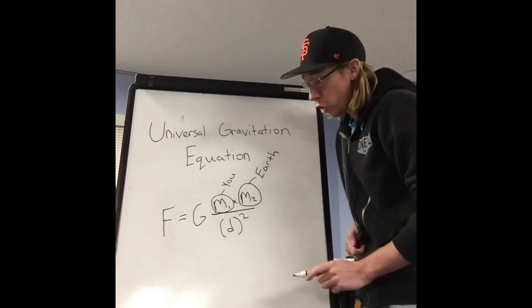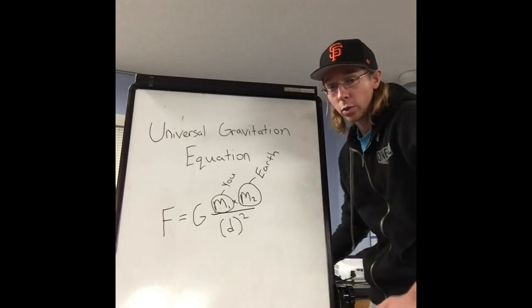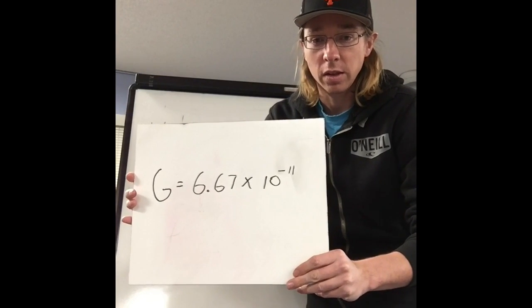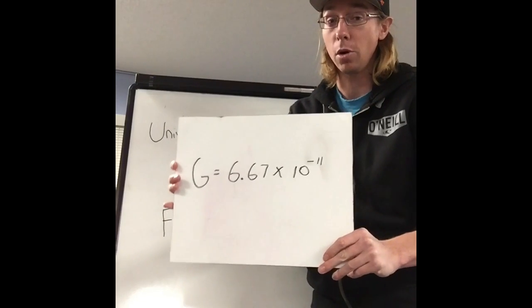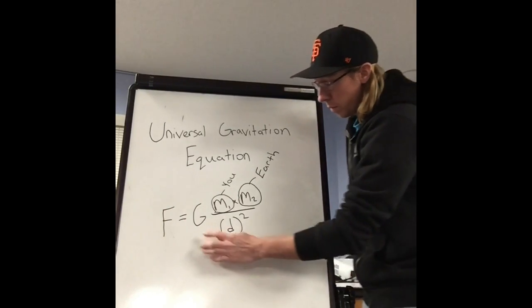And this G, this G is a constant, and it's a really small number. Check it out. So G is 6.67 times 10 to the negative 11. Very, very, very small number. Okay, but it will always be the same number.